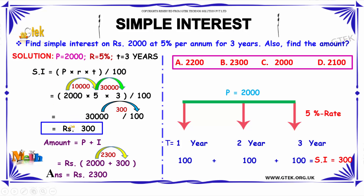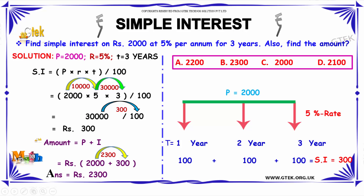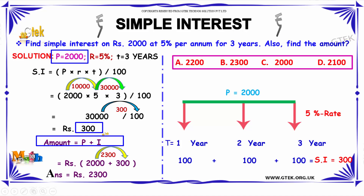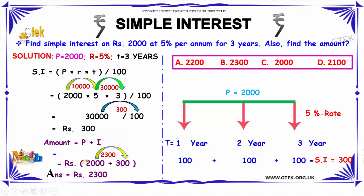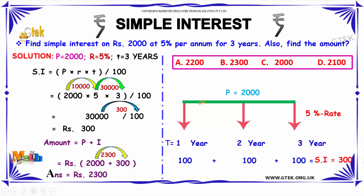Therefore the simple interest is equal to 300. To find the total amount, the total amount equals the principal plus the interest: 2000 + 300 = 2300. Therefore option B, 2300, is the answer.